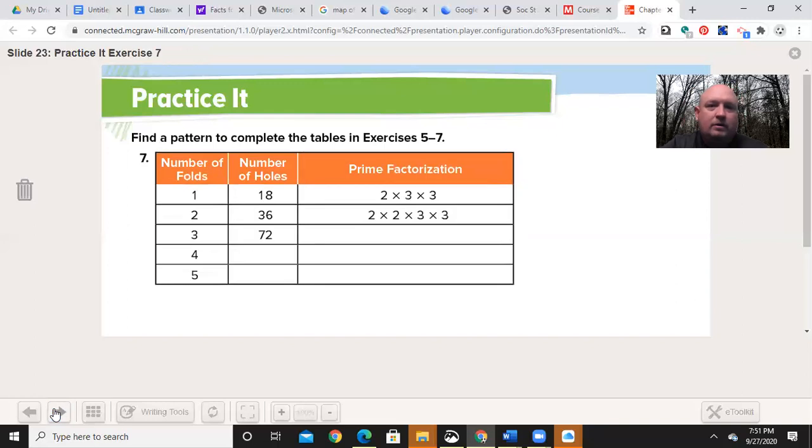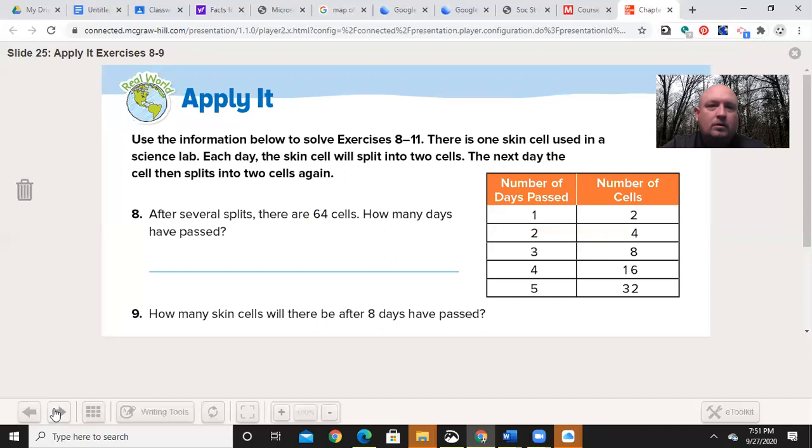Let's go a little bit further here. I'm going to skip one and let's look at applying this. Use the information below to solve exercises eight to 11. There's one skin cell used in a science lab. Each day, the skin cell will split into two cells. The next day, the cell then splits into two cells again. Then we have one day, two cells, two, four, three to eight. After several splits, there are 64 cells. How many days? And then at number nine, how many skin cells will there be after eight days have passed? Number 10, how many days would need to pass before there were over 2,000 cells? And 11, make a plan after 15 days there were 32,768 cells. After how many days were there 16,384 cells? Go ahead and finish those four questions by pausing the video and I'll see you on the other side.